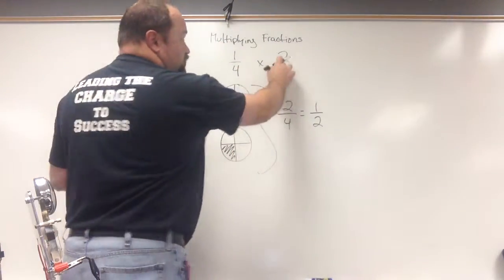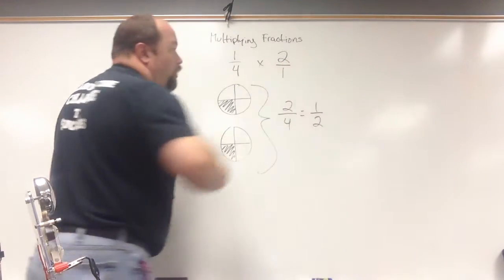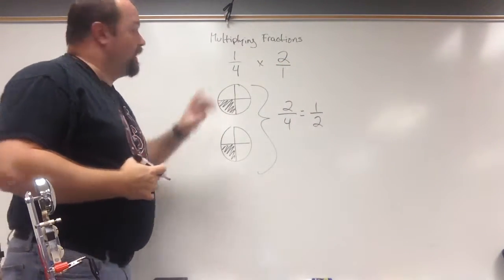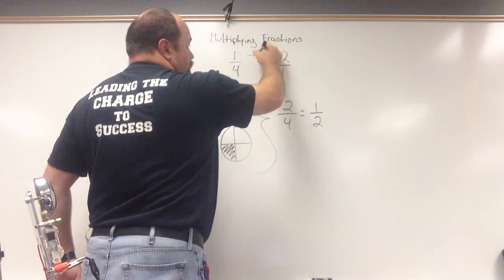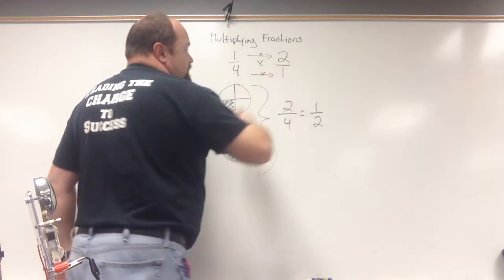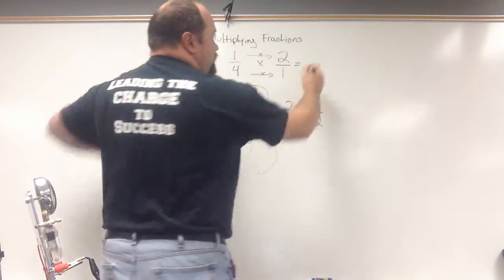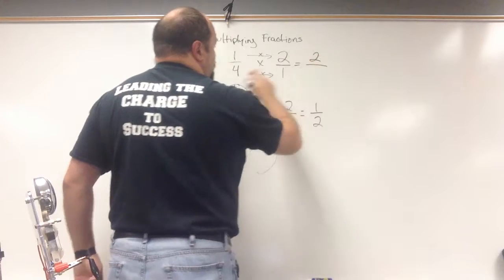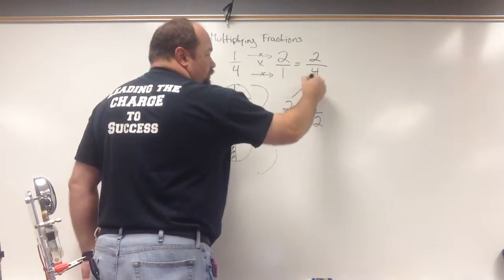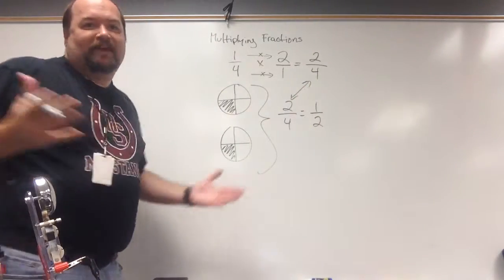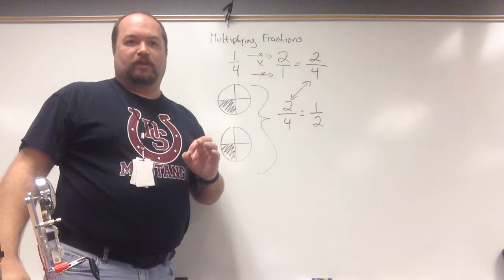Now, because two is two wholes, I can also write that as two over one. And now I'm just going to multiply across. So I'm going to multiply the one times the two. I'm going to multiply the four times the one. So what I end up with is one times two gives me two, and four times one gives me four. That's it. Super, super easy.